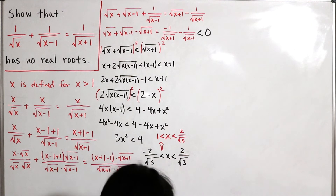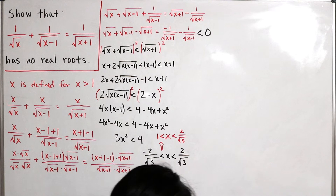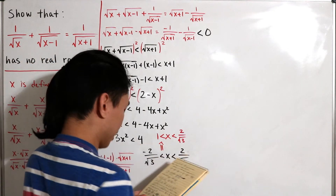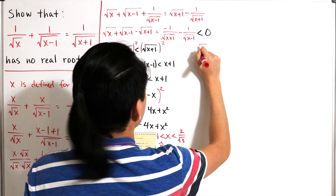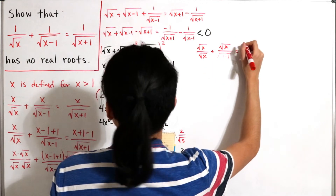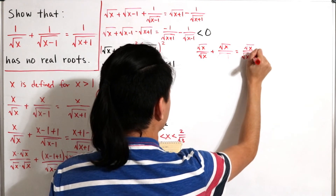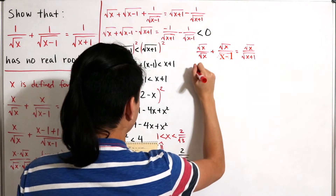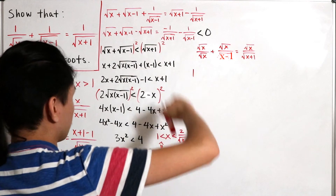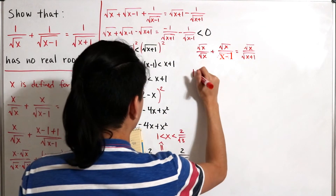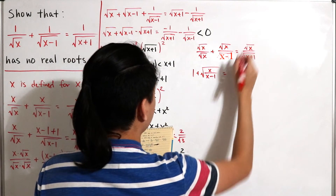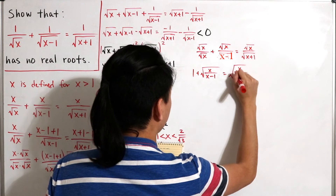That compound inequality alone isn't sufficient to prove there are no real roots, so we need to continue. Going back to the original equation, this time we multiply everything by the square root of x. Doing so gives us the square root of x over the square root of x, plus the square root of x over the square root of x minus 1, equals the square root of x over the square root of x plus 1. The first term simplifies to 1 using exponent rules.